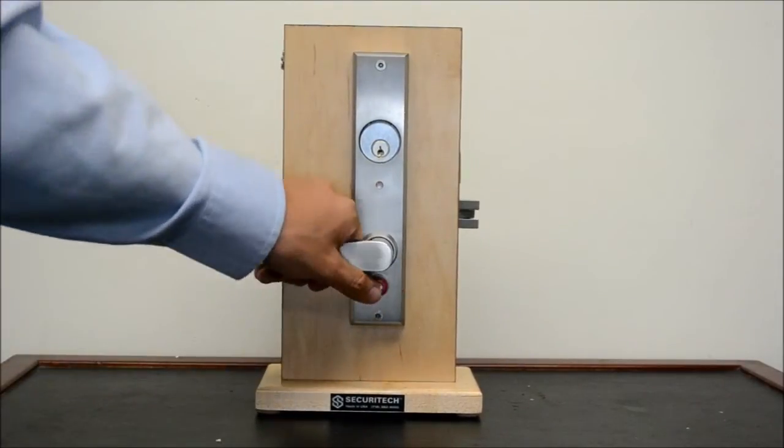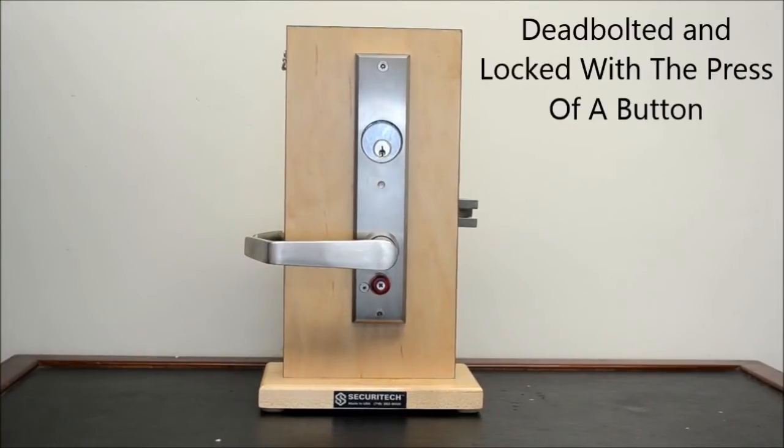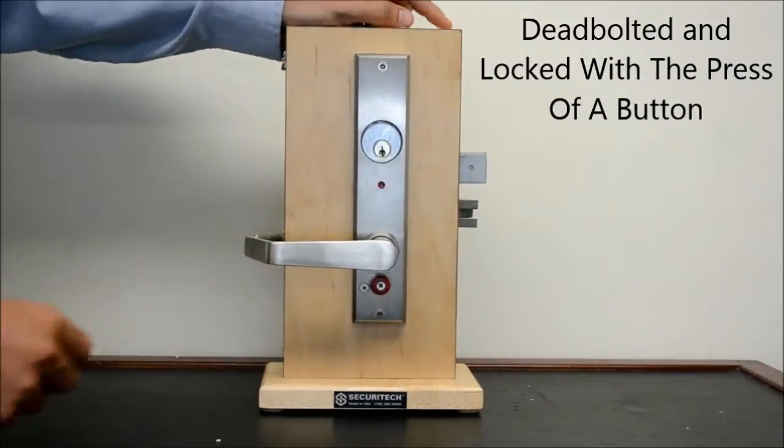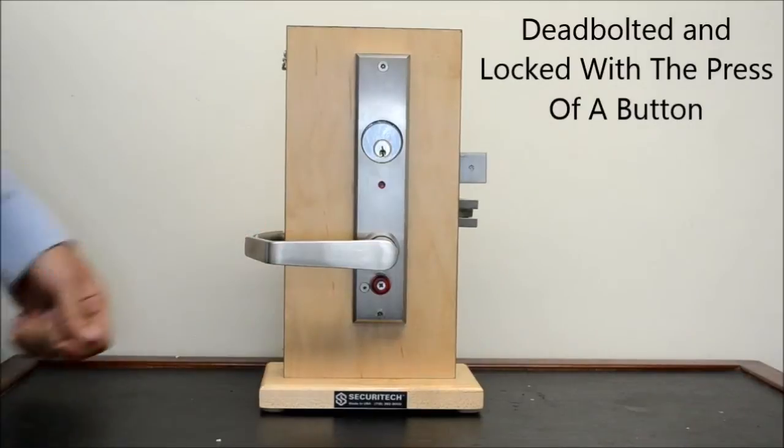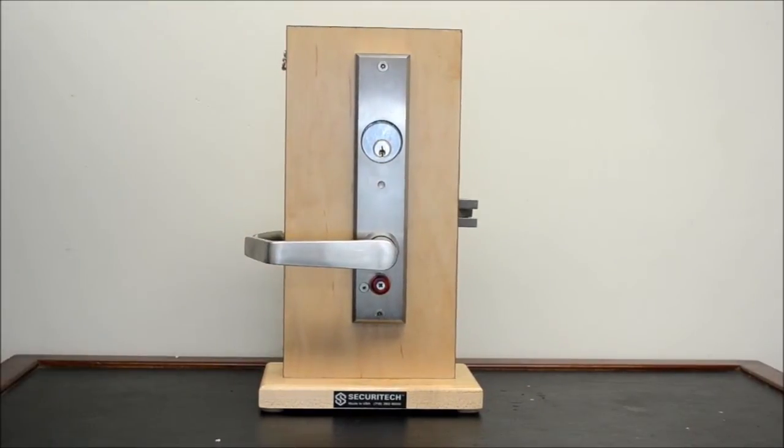In the case of an intruder, the teacher simply has to press a button located underneath the lever on the inside of the QID lock. Pressing the button instantly shoots the deadbolt into the frame and locks the lever on the hallway side of the door.